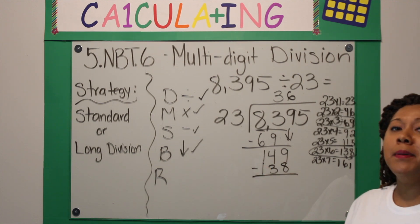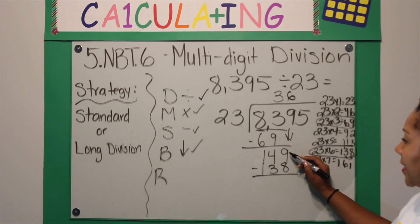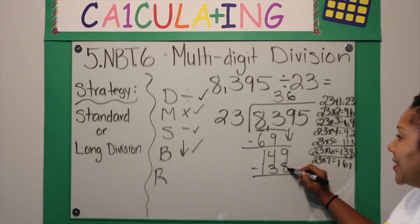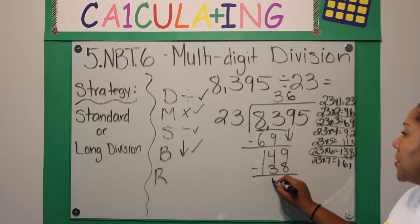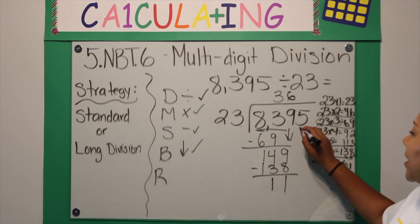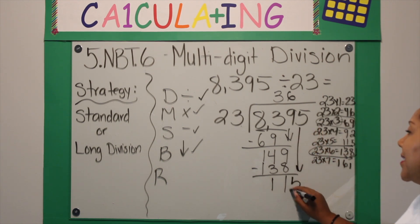This problem here, you do not have to regroup because 9 is larger than 8 and it's at the top. So 9 minus 8 is 1, 4 minus 3 is 1, and that is 0.